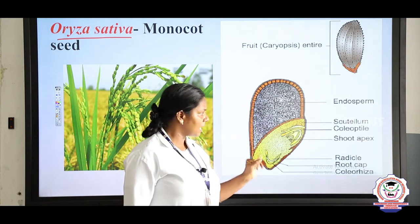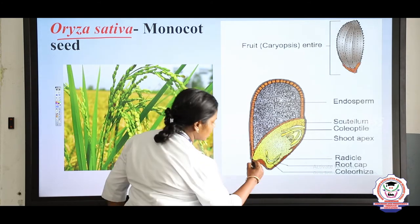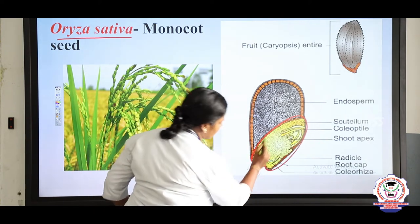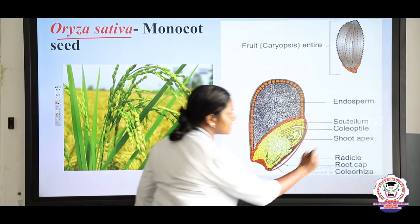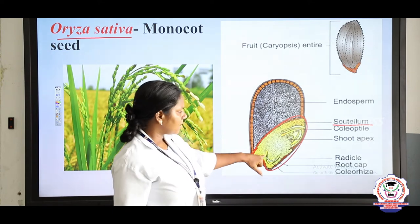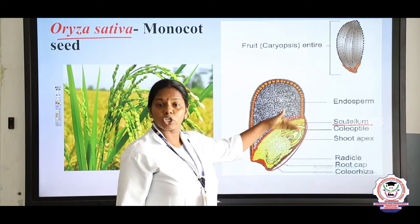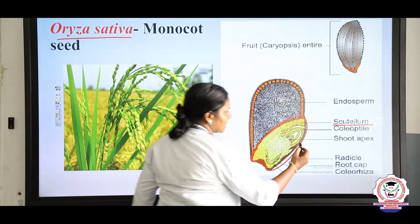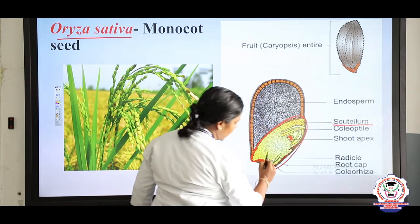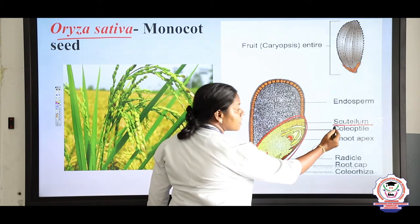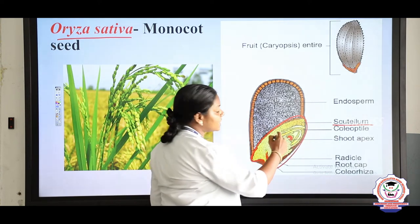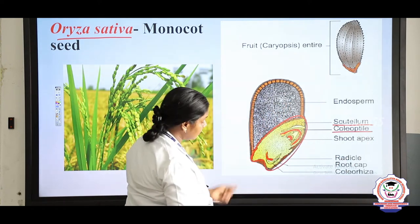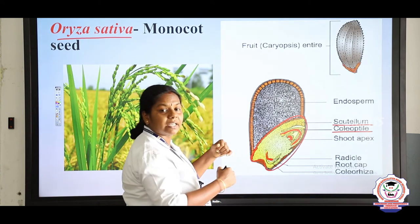This is the inner structure of the monocot seed. It possesses more endosperm and the embryo gets nourishment through the endosperm. The embryo is covered by a shield-shaped structure called the scutellum. The embryonic axis — the shoot is the plumule and the root is the radicle.